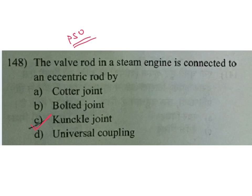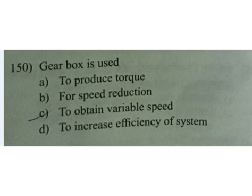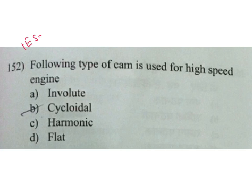Taper on the cutter and slot is provided on one side only. Gear box is used — C is the answer — to obtain variable speed. The piston rod of a steam engine is usually connected to the crosshead by means of a cotter joint; and for ball rod and eccentric, knuckle joint is used. For high speed engines, the following type of cam is used: cycloidal cam. This is also an IES question.